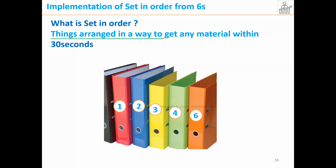Things are arranged in a way so that you can get any material within 30 seconds — that is called the 30-second rule. If you go and ask for any item, within 30 seconds you should be able to pick that item or document. If you are searching for a document or data and the system is not well-ordered, you will keep searching for whatever items are required to do the particular activity.